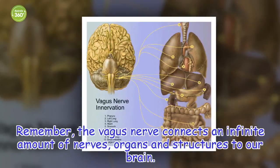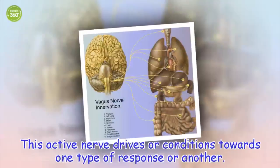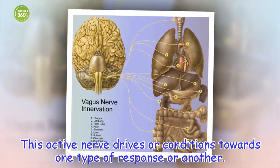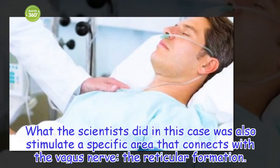It's like a channel through which infinite functions are connected. This active nerve drives or conditions towards one type of response or another. What the scientists did in this case was also stimulate a specific area that connects with the vagus nerve, the reticular formation.